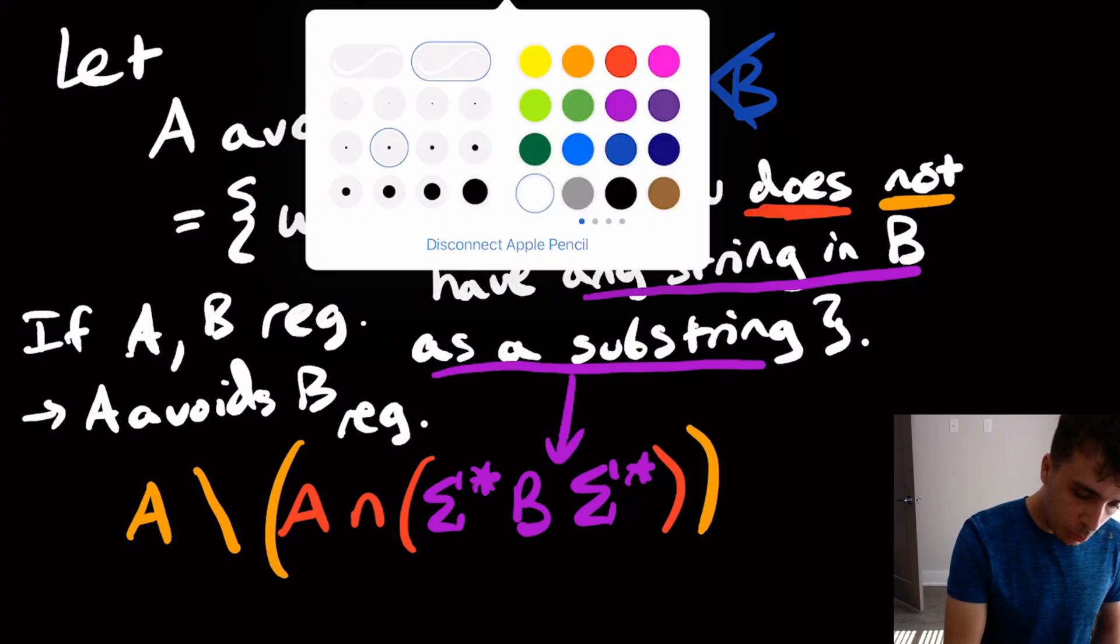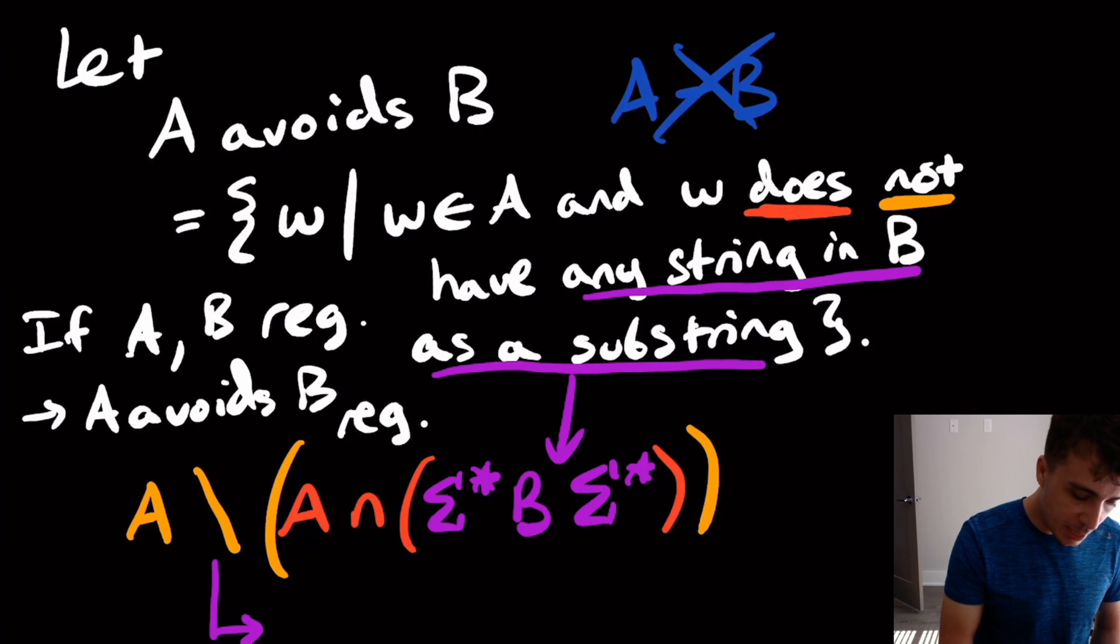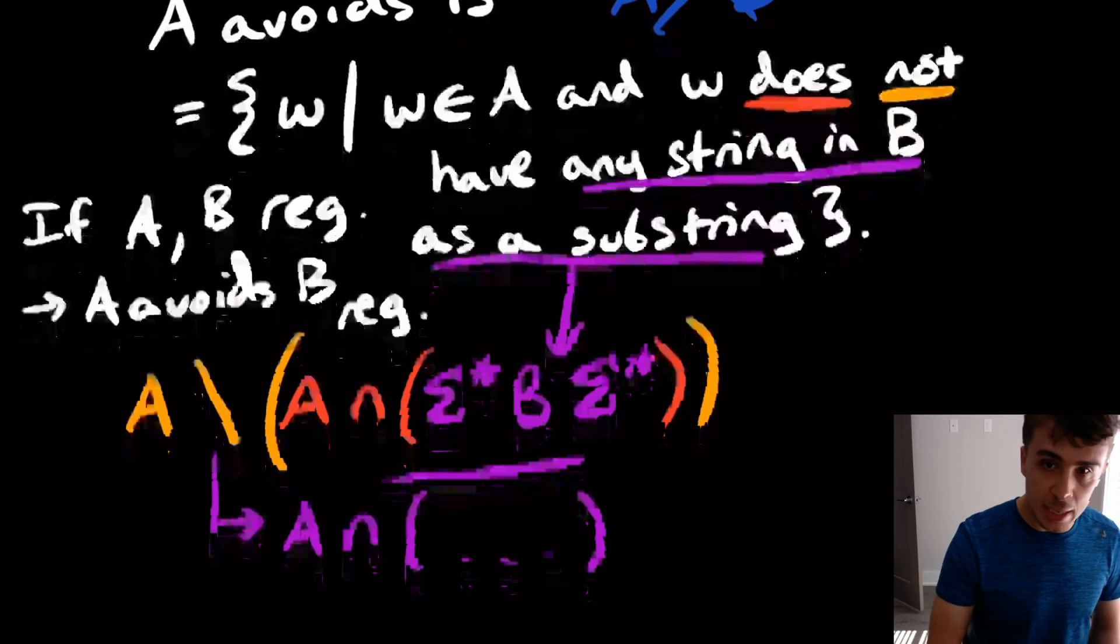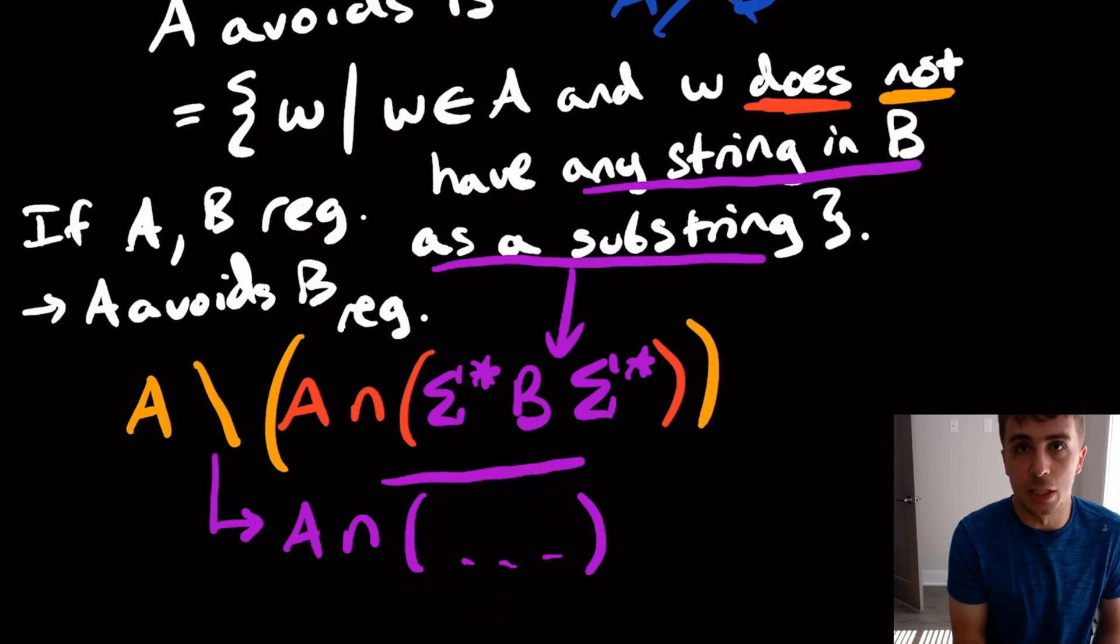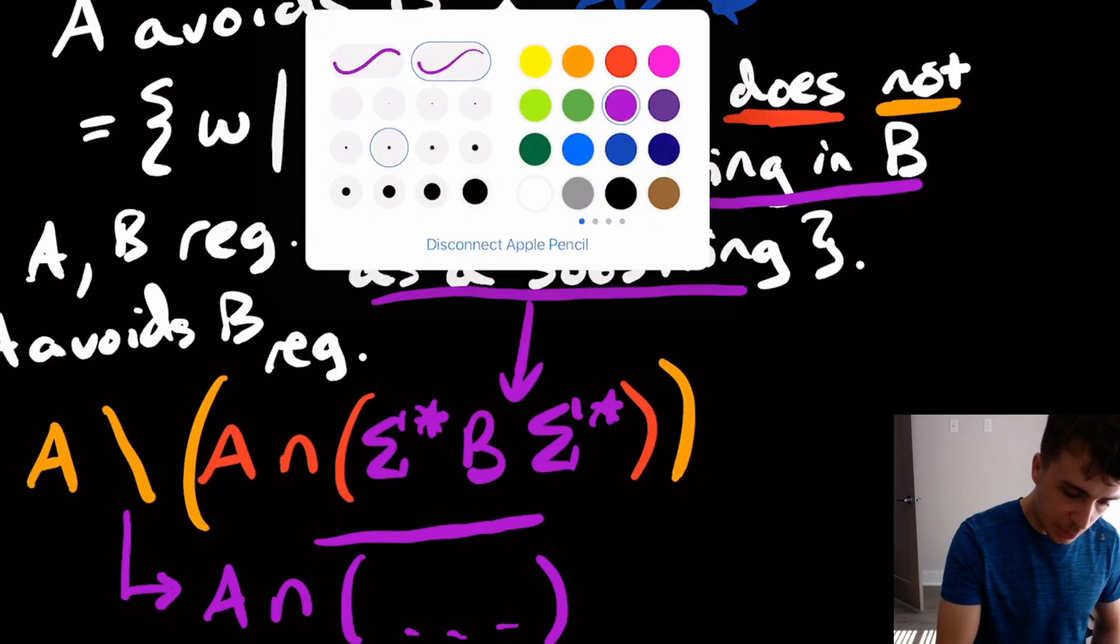Well, what we can do is we can rephrase the set minus to be intersection with complement. So what we can do here is we can take A intersection, this whole thing complement. Well, we know the stuff in the red is regular. So if we complemented it, then the complement part is regular, because regular languages are closed under complement. And now we have A again, which is regular, intersection something that is regular. And so again, we have closure under intersection. And therefore, this whole thing is regular.